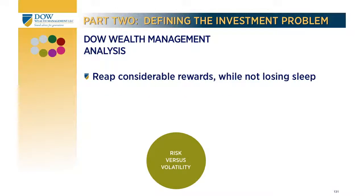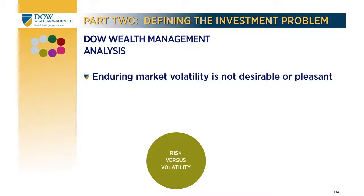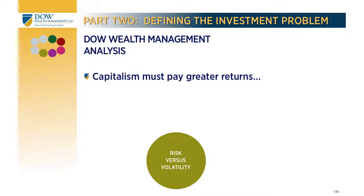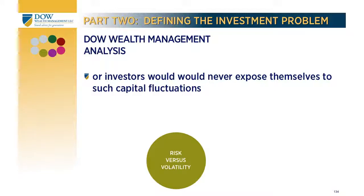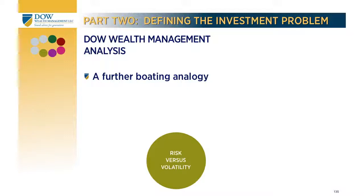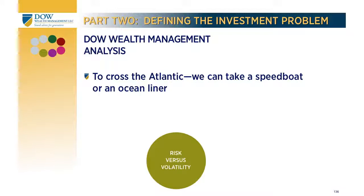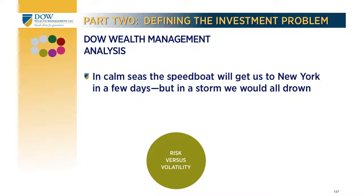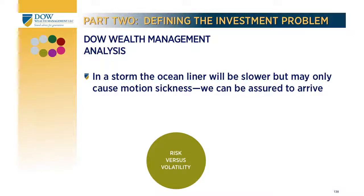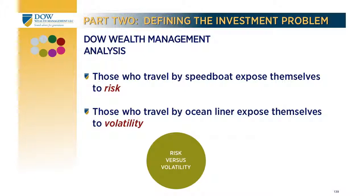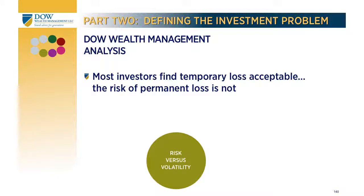At Dow Wealth Management, we hope to minimize risk while being willing to endure volatility. Such investors seem apt to reap considerable rewards while not losing sleep that they might lose everything. Enduring market volatility is not desirable or pleasant; however, in theory capitalism must pay greater returns to such investors — or no one would ever expose their capital to such fluctuations in value. Another boating analogy: suppose we have the choice between a speedboat or an ocean liner to cross the Atlantic. If the seas are calm, the speedboat gets us to the UK in a few days — but if there is a storm, we'll all drown. On the ocean liner, travel is slower, but the storm will only cause motion sickness. Those who travel by speedboat expose themselves to risk; those by ocean liner expose themselves to volatility.